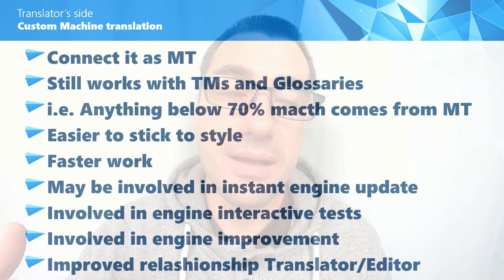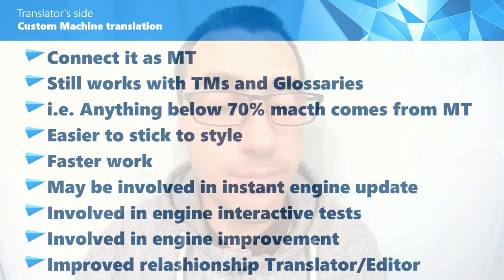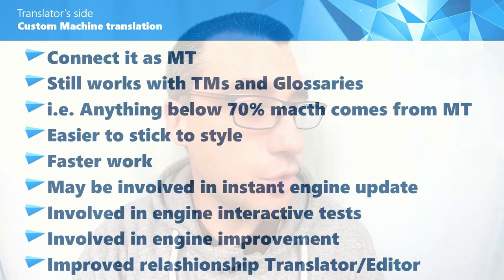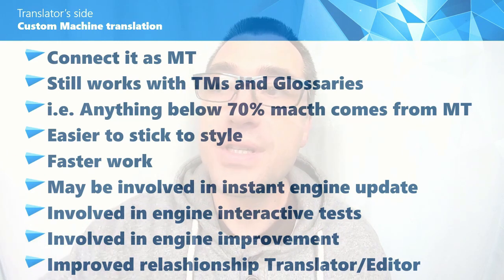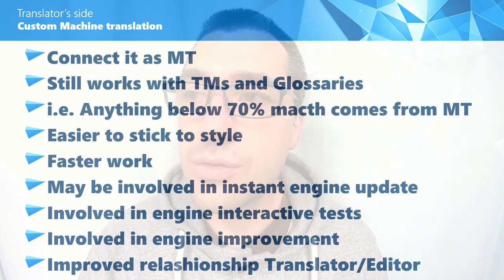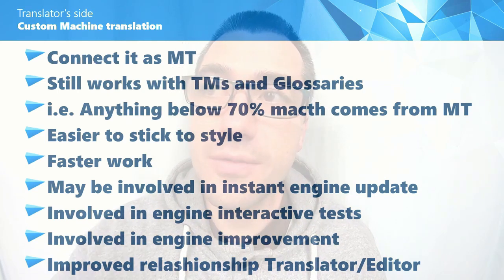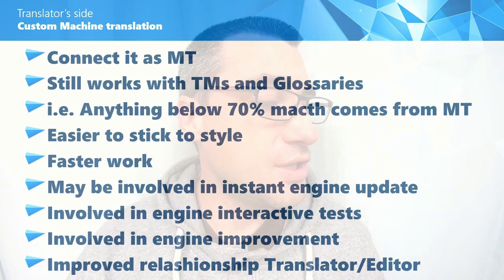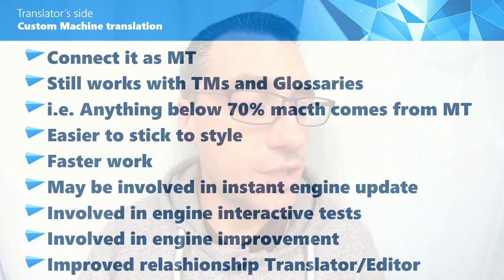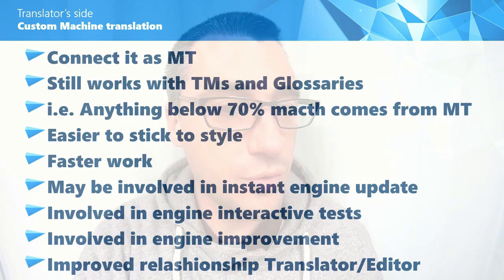This will help the translator to stick more easily to the style, because he will get suggestions that are custom-made from the machine translation, enabling faster work. The translator can also be involved with instant engine updates by sending what is being translated to the machine translation so it gets updated. The translator can be involved in testing and improving the engine, which can also help improve the relationship between the translator and an editor, since the basis for work gets improved quality.